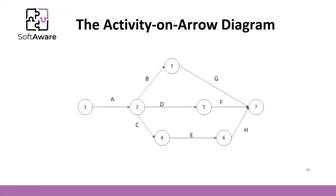Let's look at the representation. We have nodes and we have arrows. Each arrow represents an activity, a work package, a task. Node one connects to node two, and it's task A. After task A, you can have in parallel three tasks — B, D, and C. Task B goes from node two to three, task D from node two to five, and task C from node two to four. Activity G can only be performed after A and B end. F can be performed only after A and D end. And H only after A, C, and D end. This is the meaning of the diagram.